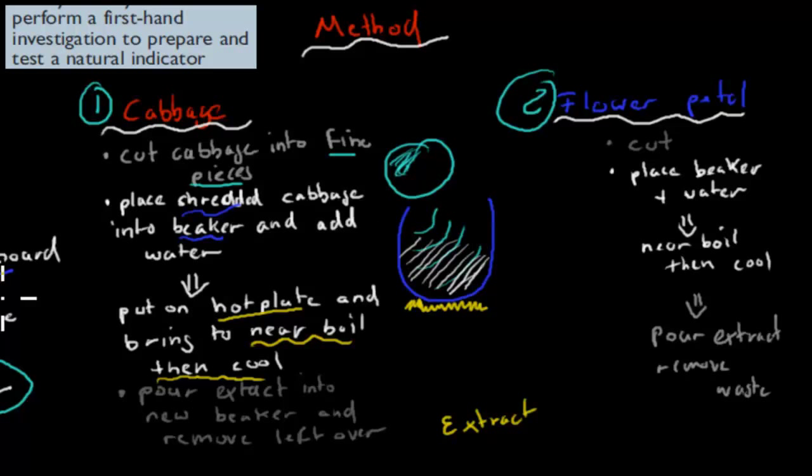We've taken our cabbage, finely diced it, put it into water and into a beaker, boiled that beaker, and then let it cool. Now we have our extract. The solution is what we want. We'll also have some leftovers, some hard stuff we don't want. We get rid of the hard stuff and pour that extract into a new beaker. That new beaker will be our cabbage indicator.